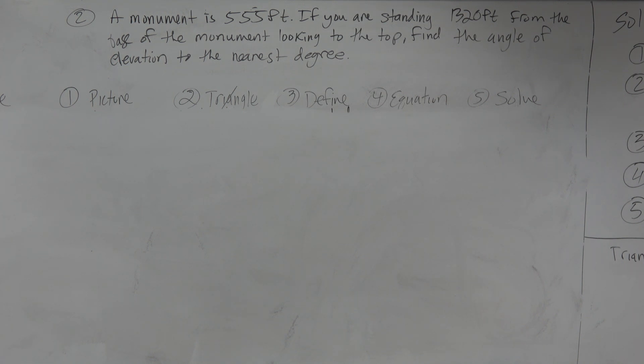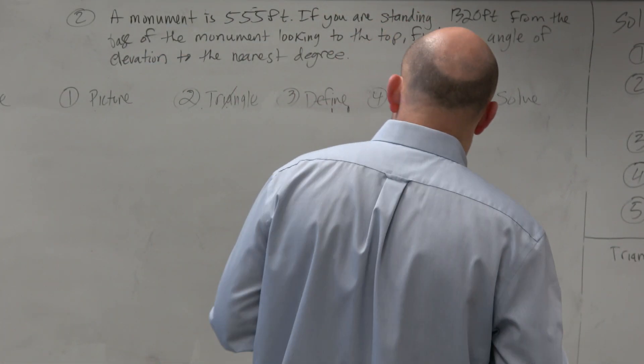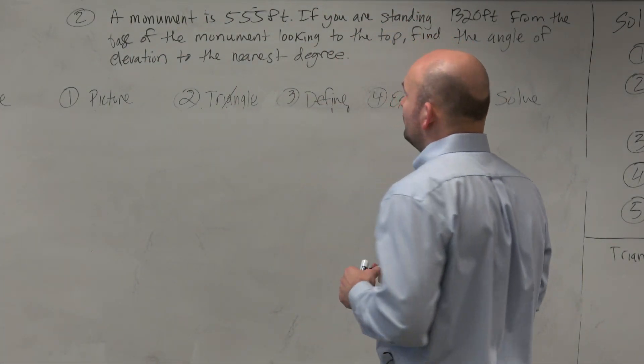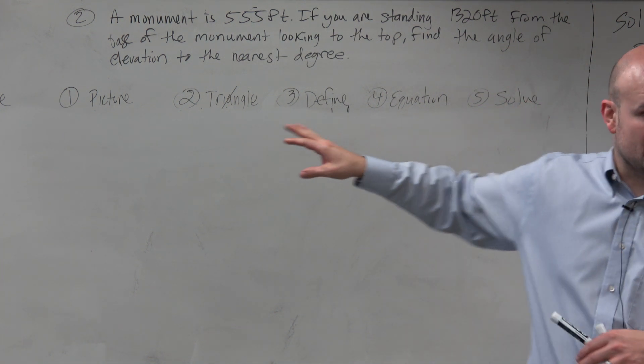In this example, ladies and gentlemen, it says a monument is 550 feet tall. If you're standing 1,320 feet from the base of the monument, look into the top, find the angle of elevation to the nearest degree. So you guys can see, I kind of have like five steps for the word problems.